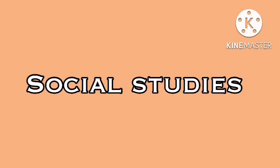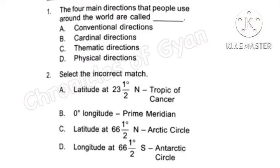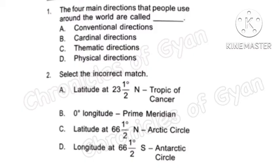First section is Social Studies and each question carries one mark. Question 1: The four main directions that people use around the world are called dash. The four directions are East, West, North and South, and it is called Option B: cardinal directions.